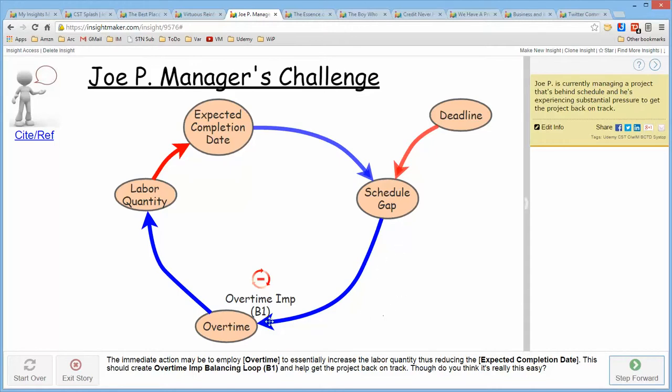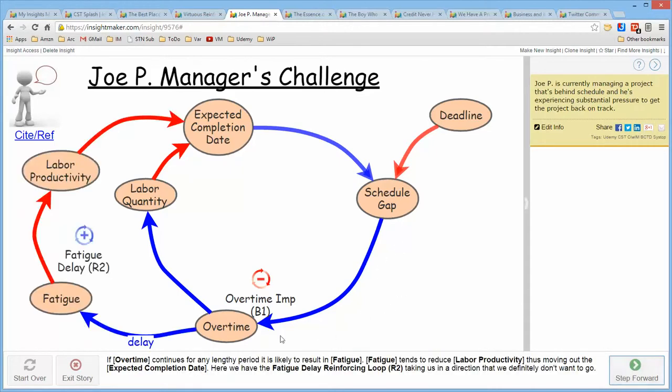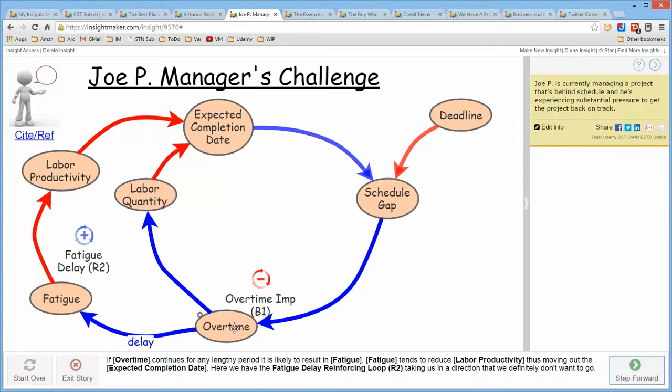And then I ask myself, what does overtime influence? And I find out that overtime, prolonged overtime, actually leads to fatigue and fatigue reduces the labor productivity. Labor productivity should improve the expected completion date. But since labor productivity is going down, the completion date is getting later. So this particular loop, when I walk it, has two opposite influences in it, so it's a reinforcing loop.